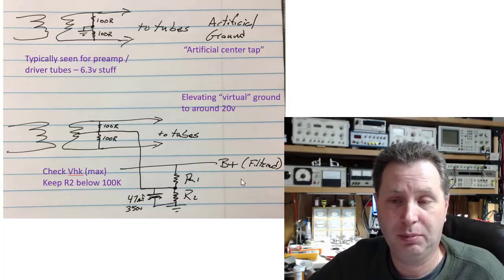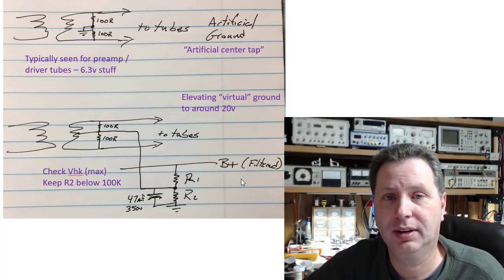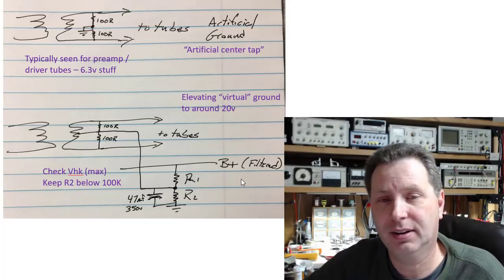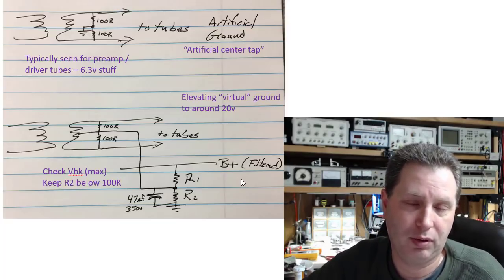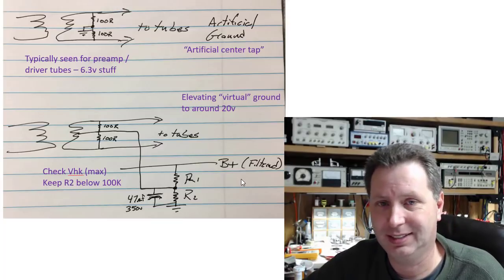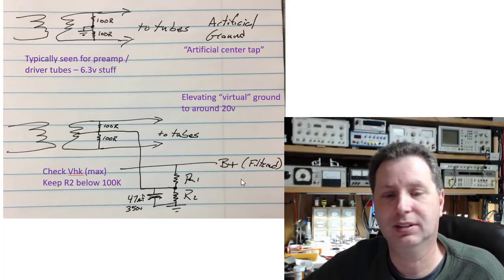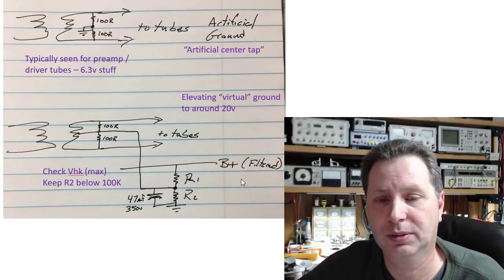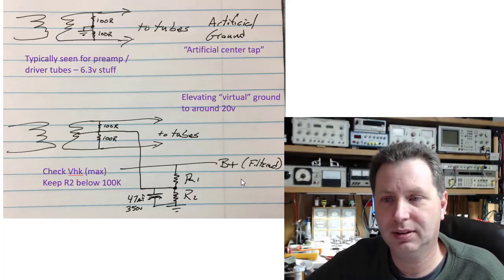So when should it be used? I might recommend using this anytime you're building a single-ended amplifier that's not a directly heated cathode, so like if you're running KT88s, EL34s, KT66s, 6L6s, etc. for your output tubes. Thanks for watching everybody, hope this makes sense.